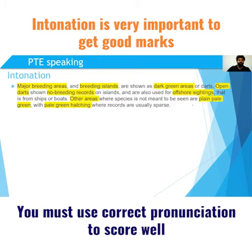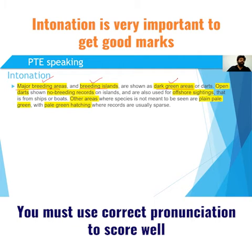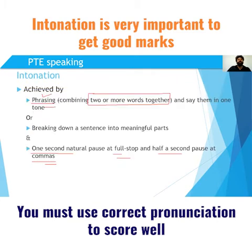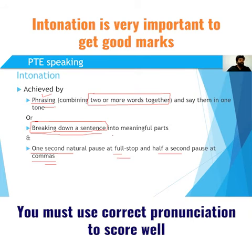Looking at a read aloud example, I have highlighted some phrases: 'major breeding areas', 'breeding islands', and 'dark green areas'. I should say the words without any pause or gap in between — 'major breeding areas', 'breeding islands', 'dark green areas'. If you take care of phrasing properly, it will automatically bring intonation. Also, one sentence will have certain meaningful parts; if you can break a sentence into its different aspects, with one aspect having one tone and another aspect a different tone, that will be even better.